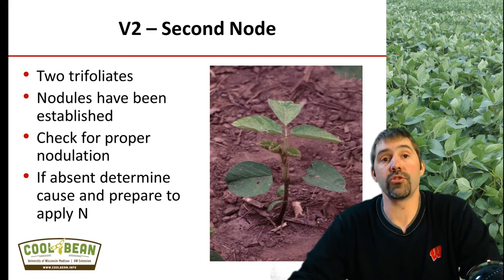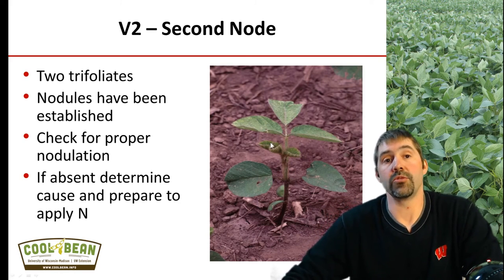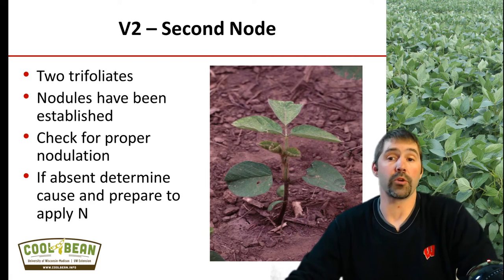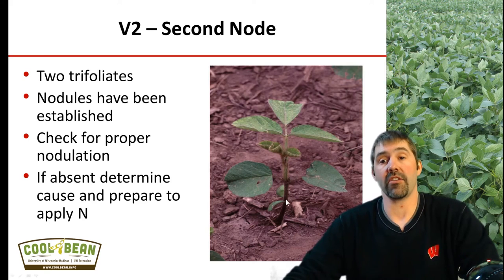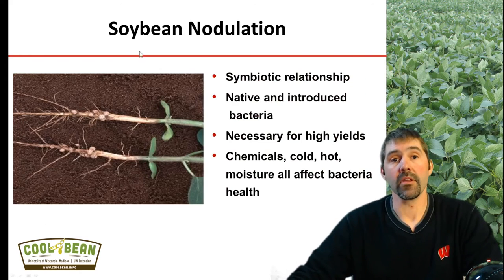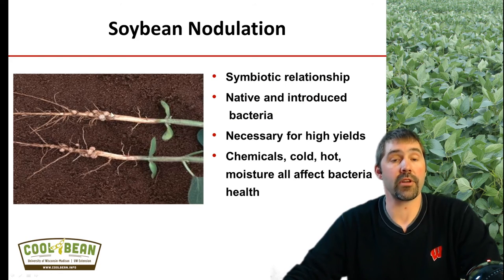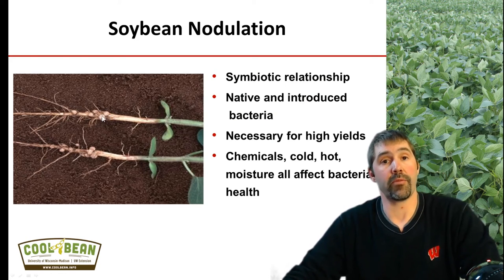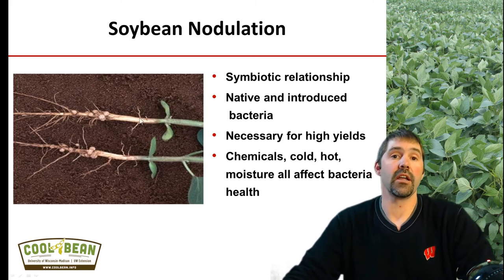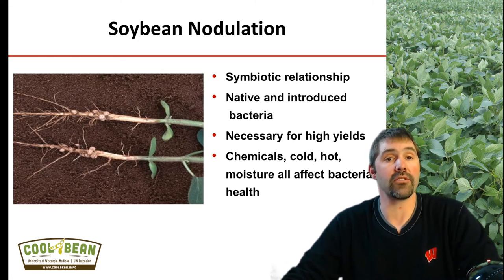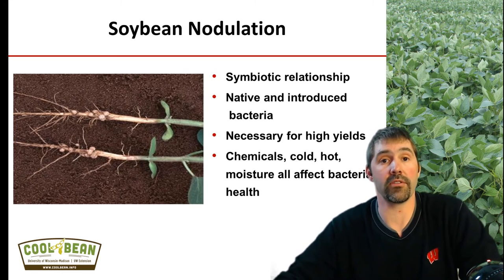The next growth stage is V2, where we have two trifoliates, and this is a growth stage where the nodules are beginning to be established. This is a timing where growers and crop consultants can go out and start carefully digging their plant roots and checking to see if proper nodulation has occurred. Soybean nodulation is a symbiotic relationship where native or introduced bacteria infect the roots — the bacteria provide the soybean with the nitrogen needed to grow, and in return the plant provides the rhizobia with sugars and carbohydrates to grow. It's a win-win for both the rhizobia and the plant.